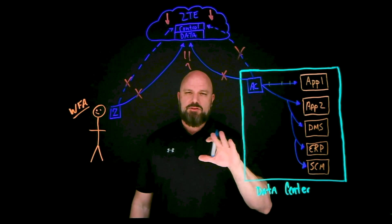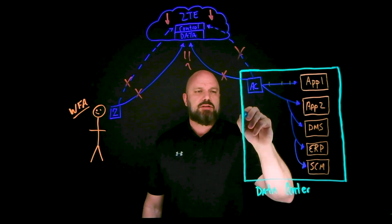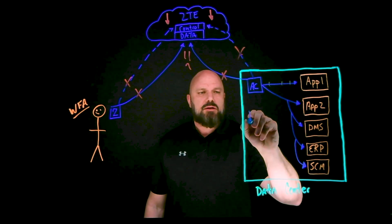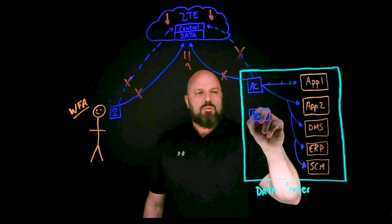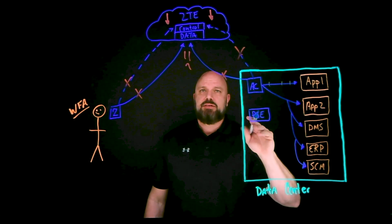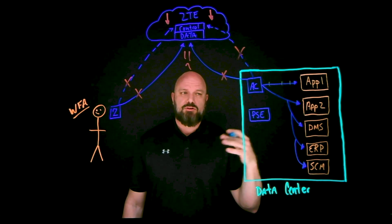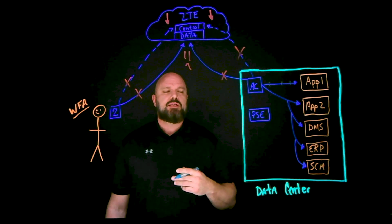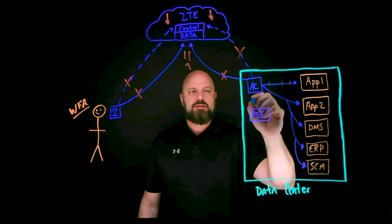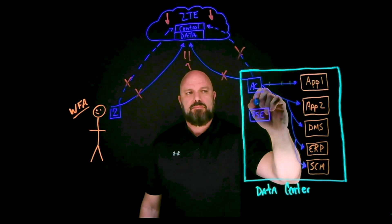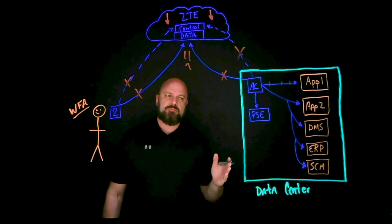There are two key components that get factored in. Number one is the Private Service Edge, used for on-prem zero trust — also called the PSE. This is the data plane, the enforcer of all things. The same way the application connector reaches outbound to the data plane, it does the same thing to the PSE. But this is only half the pipe, because there's still the control plane — and unfortunately, it's down.